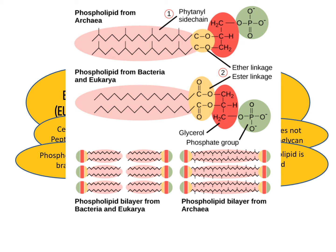In the figure you can see phospholipid from archaea and phospholipid from bacteria. In archaea the phospholipids are branched and have the phytenyl side chain, whereas in bacteria these are not present. Additionally, the phospholipid in bacteria is a bilayer, and in archaea it is a monolayer.